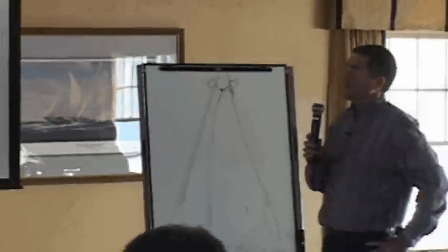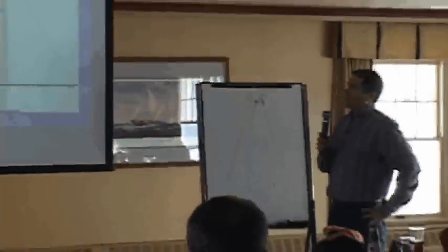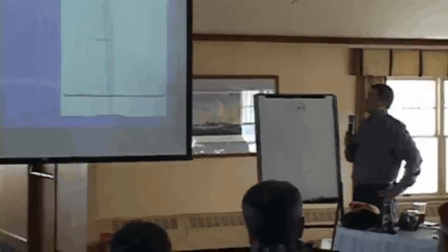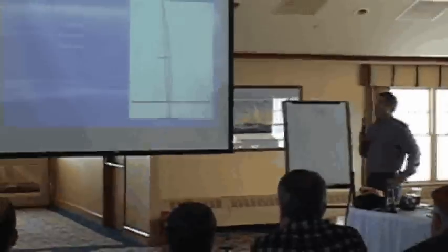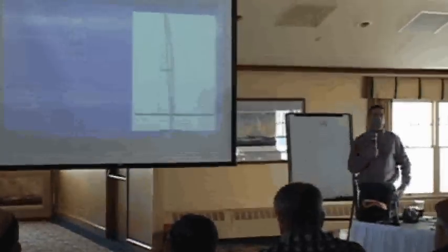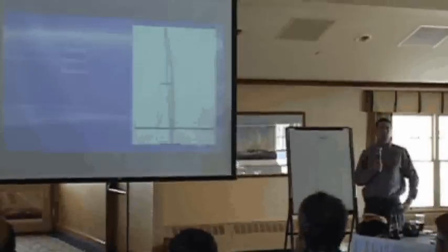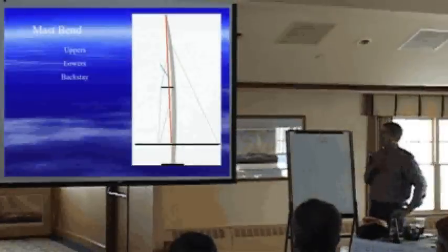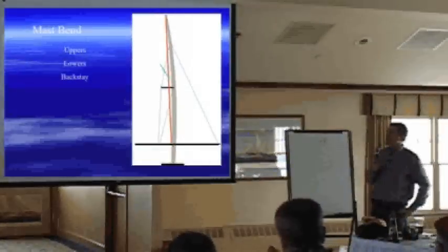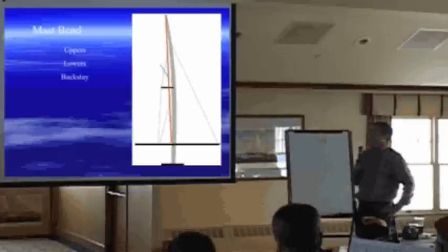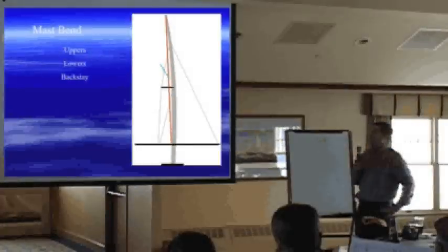The uppers tend to bend your mast a little bit more. The lowers tend to pull the mast in. We talked about the fact that the lowers will also affect side bend, not as much on a J24, but on a J24 we're mostly concerned with fore-aft. And the other thing that affects mast bend, which we didn't talk about here, really is mainsheet.